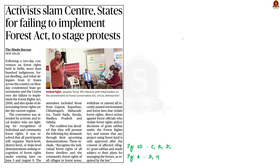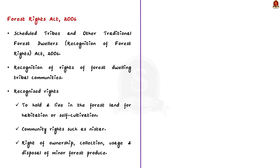In a two-day convention in Delhi, tribal delegates condemned states and the centre regarding the failure to implement the Forest Rights Act 2006, also known as the Scheduled Tribes and Other Traditional Forest Dwellers (Recognition of Forest Rights) Act 2006. This act recognises the rights of forest dwelling communities and other traditional forest dwellers by ensuring their rights over forest resources. Let us see the rights recognised under this act one by one.